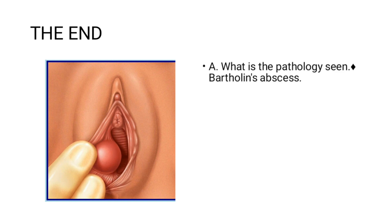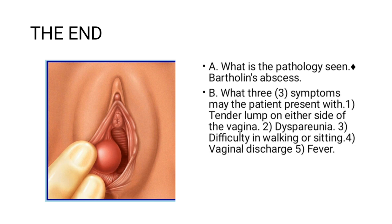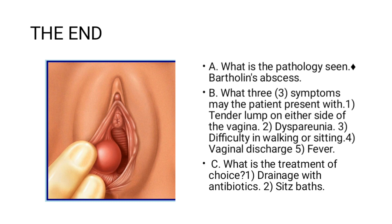To answer the case study: the pathology seen is a Bartholin's abscess — Bartholin's cyst would also be accepted. The three symptoms the patient may present with include: a tender lump on either side of the vagina, dyspareunia, and difficulty walking or sitting. There may also be vaginal discharge and fever. The treatment of choice is marsupialization.